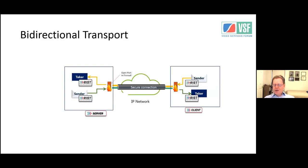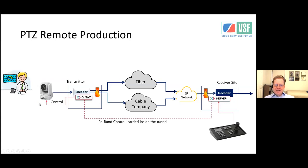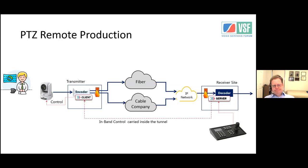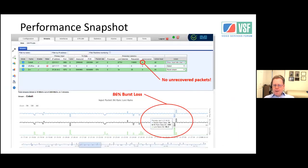RIST also has full bi-directional support — it's not just one-way. For return data, a good example is a PTZ camera: PTZ control and CCU can come back via the return path, allowing remote control of the PTZ camera via the RIST transport. Several vendors are working on incorporating RIST into PTZ cameras. Currently PTZ camera data flow can already come back through RIST, and this is available within the main profile today.